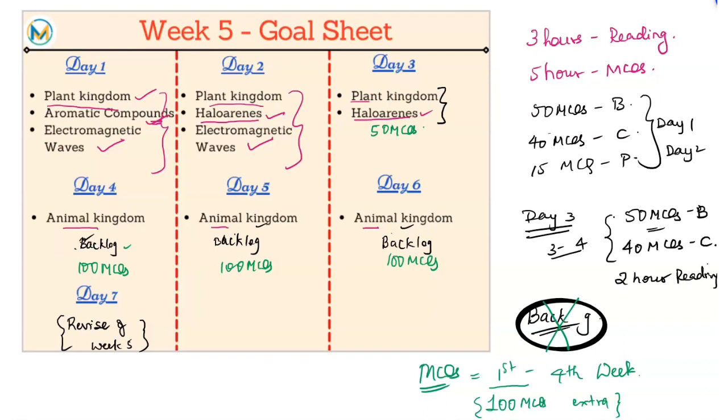So the ones who are having backlog, complete your backlog. And the ones who are done, who are up to date with their weekly goals, do extra 100 MCQs. This is your point of getting an extra bonus.